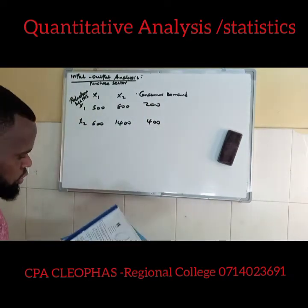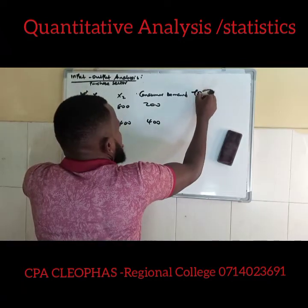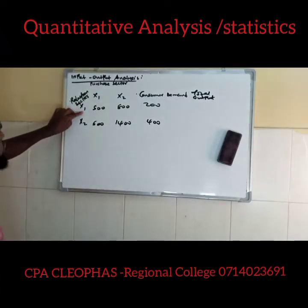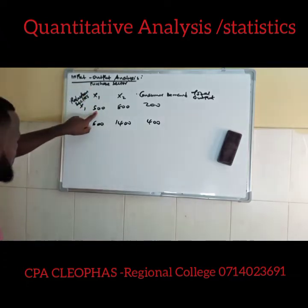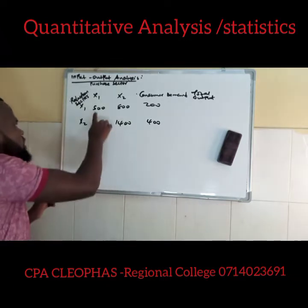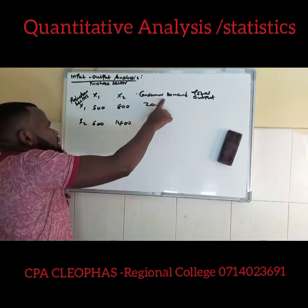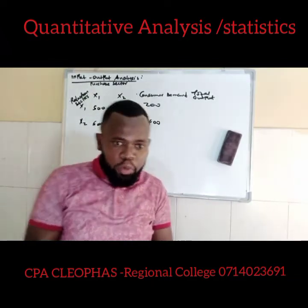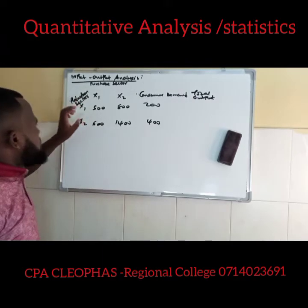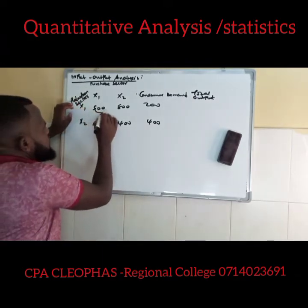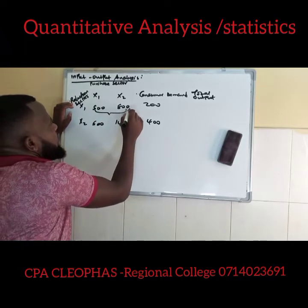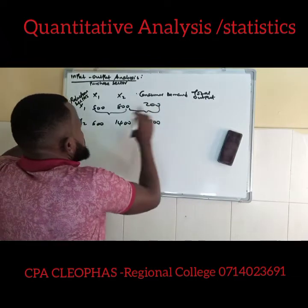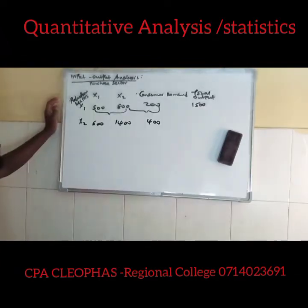We need to get the total output first. Total output is a combination of intermediate demand plus final demand, and total input equals total output under this concept. For sector X1: it sold 500 to itself, 800 to X2, and 200 to final consumers, giving a total output of 500 + 800 + 200 = 1500 units.